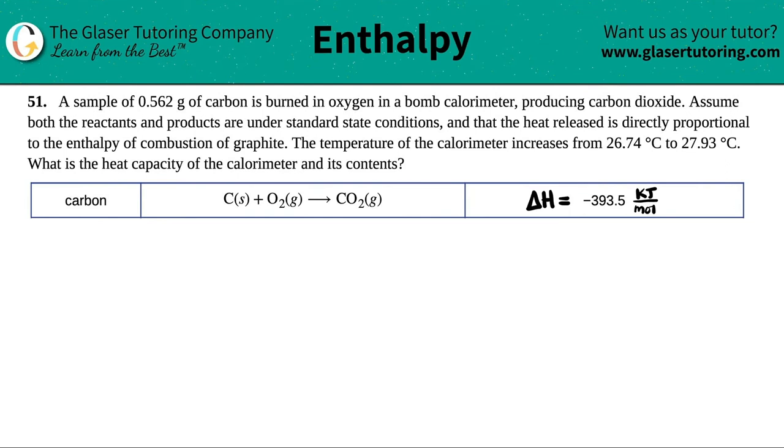Number 51. A sample of 0.562 grams of carbon is burned in oxygen in a bomb calorimeter producing carbon dioxide. Assume both the reactants and the products are under standard state conditions and that the heat released is directly proportional to the enthalpy of combustion of graphite. The temperature of the calorimeter increases from 26.74 degrees Celsius to 27.93 degrees Celsius. What is the heat capacity of the calorimeter and its contents?